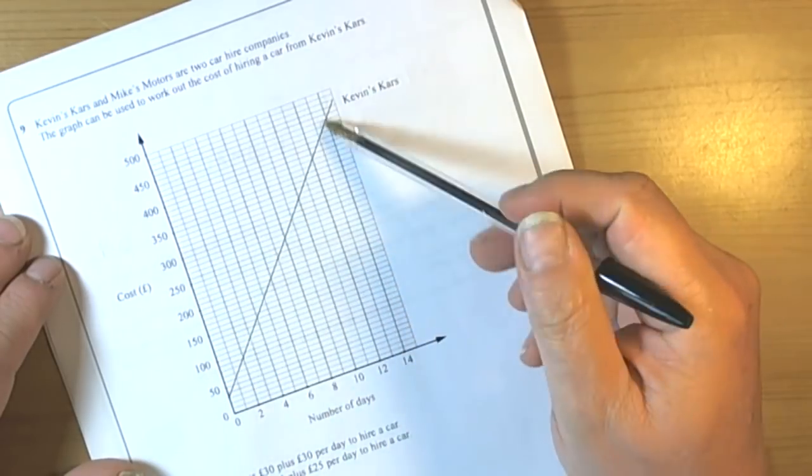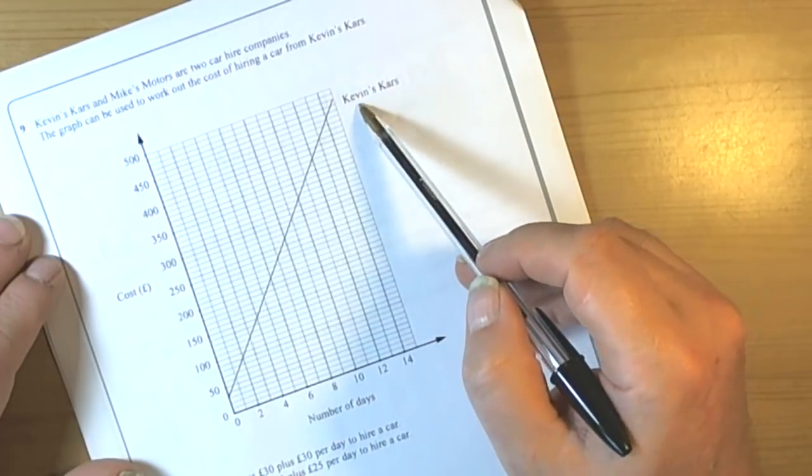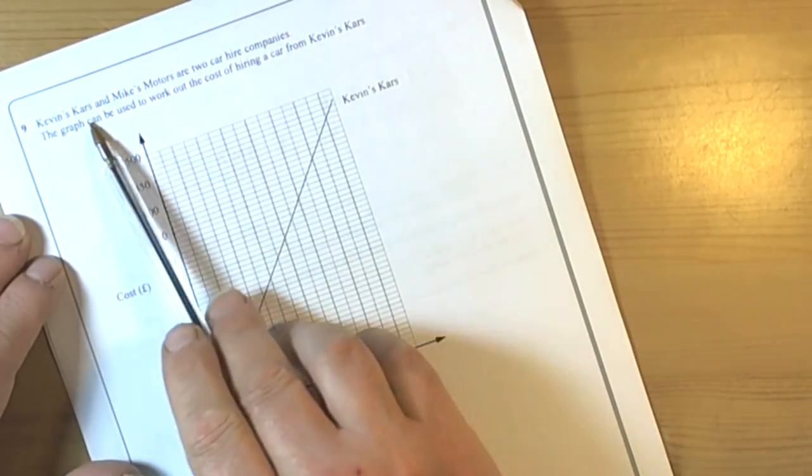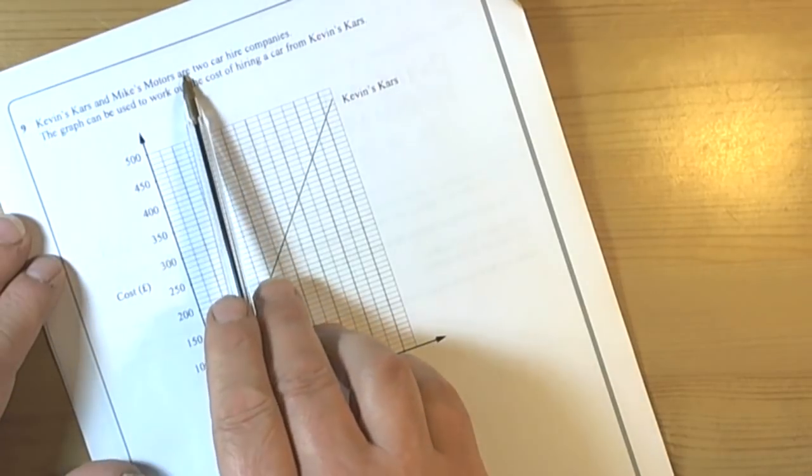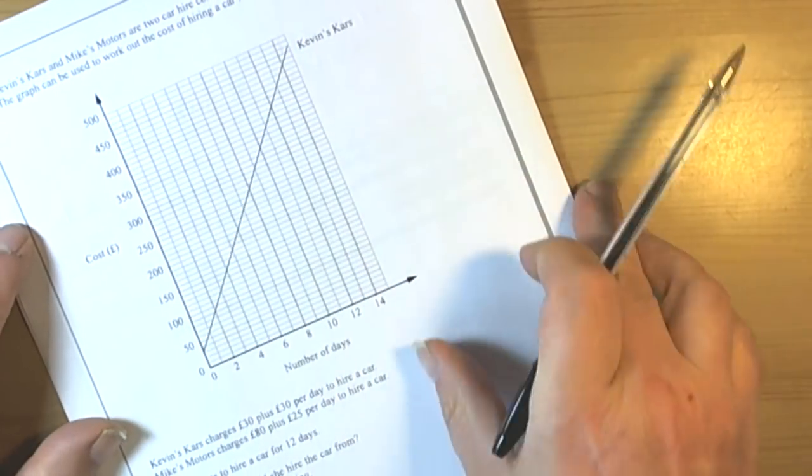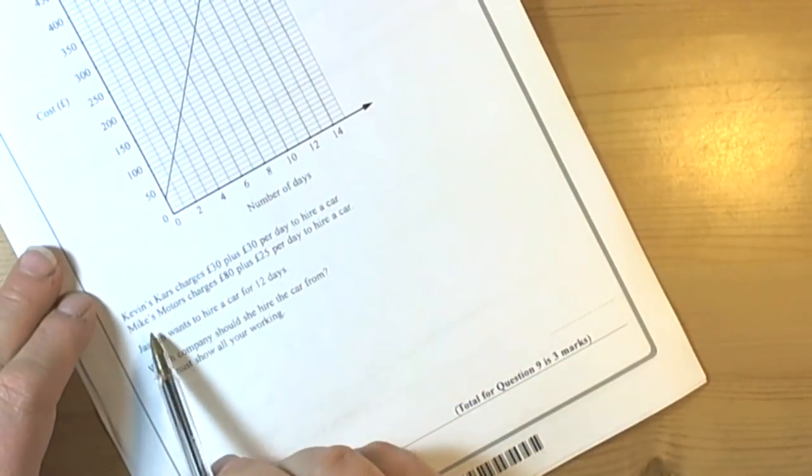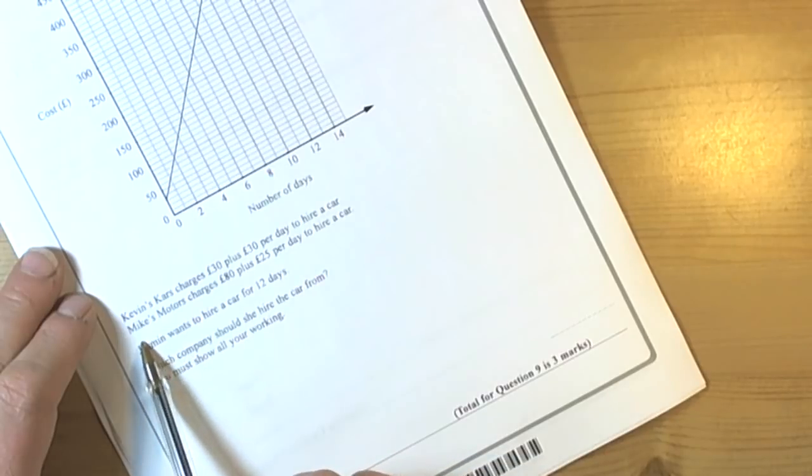This question's got a conversion graph for working out the cost of hiring a car from Kevin's Cars. They're telling us we're looking at two different companies, Kevin's Cars and Mike's Motors, and we've been given Kevin's Cars. So they're going to expect us to read off some numbers from here and look at how we can compare.